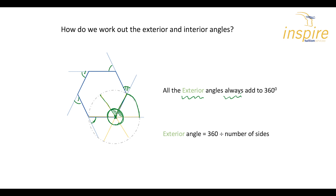Using that, we can say all the exterior angles always, for every shape, always add up to 360 degrees. That's a very important fact you need to remember. If you remember that, you can work out anything you need to on exterior and interior angles. So if we know that they always add up to 360, we can work out the exterior angle of any regular polygon by taking 360 degrees and dividing by the number of sides.